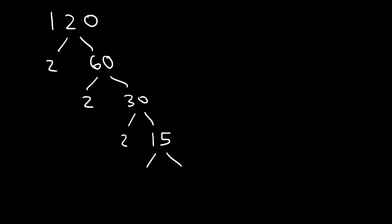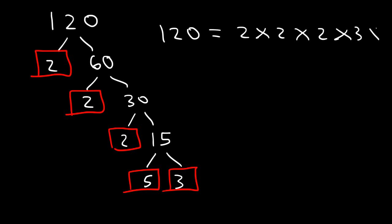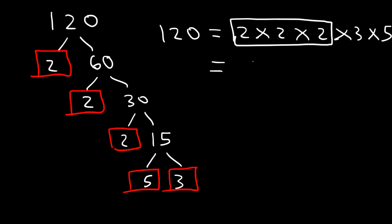Now write the prime factorization of 120. First, divide 120 by 2 — that gives 60. Sixty is even, so divide by 2 again to get 30. Thirty is also even, so divide by 2 to get 15. Fifteen is composite: it's 5 times 3. So 120 is 2 times 2 times 2 times 3 times 5. Using exponents, that's 2 to the third power times 3 times 5.